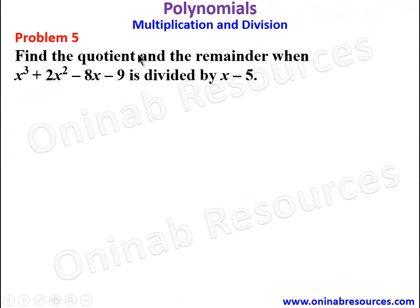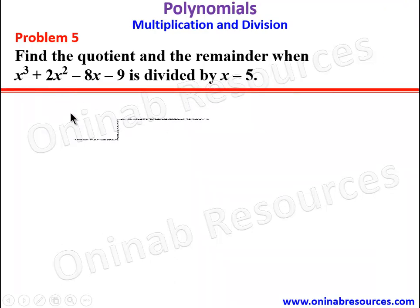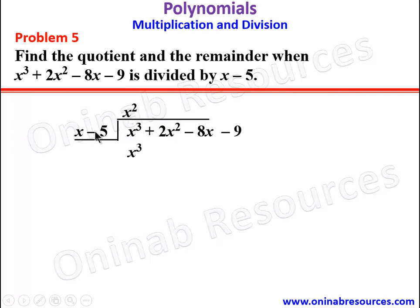For problem 5, find the quotient and the remainder when x cubed plus 2x squared minus 8x minus 9 is divided by x minus 5. Going by long division, we have x cubed plus 2x squared minus 8x minus 9 dividing by x minus 5 outside the box. x cubed divided by x gives x squared. x squared times x gives x cubed, x squared times negative 5 gives negative 5x squared. We subtract: that term is gone. 2x squared minus negative 5x squared gives 7x squared. We bring down minus 8x.